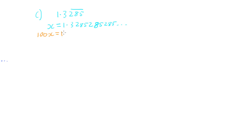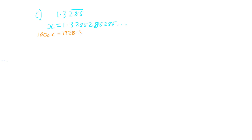Trying 1000x gives 1328.5285285... — now we have 2 with 2, 8 with 8, 5 with 5, so the recurring pattern is lining up. The recurring digits 285 align in both numbers. So 1000 is the correct power of 10.